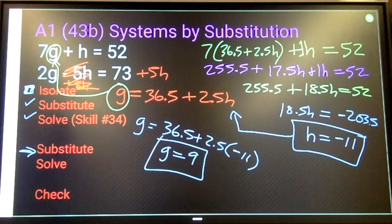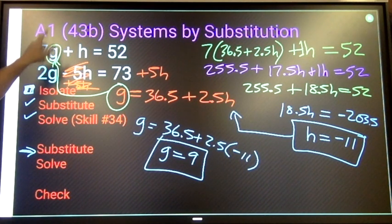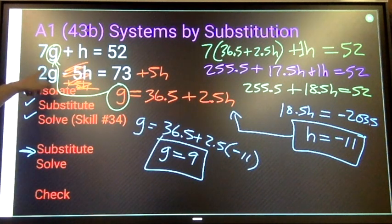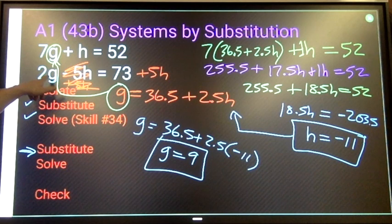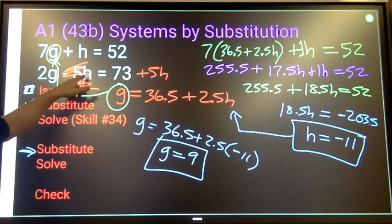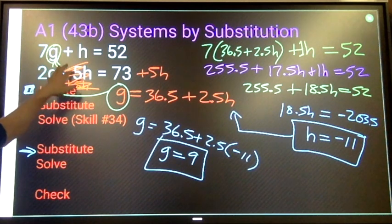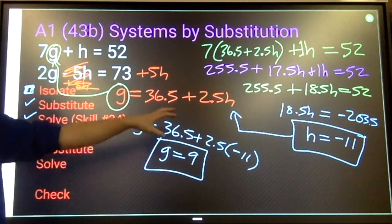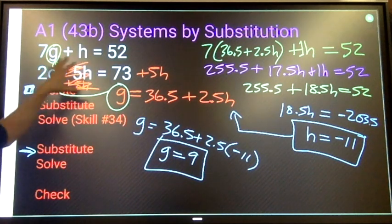You can double check: 7 times 9, 63 plus negative 11, 52. All good. 2 times 9, 18, minus 5 times negative 11, negative 55. So 18 plus 55, 73. All good. Those two values solve these two equations.